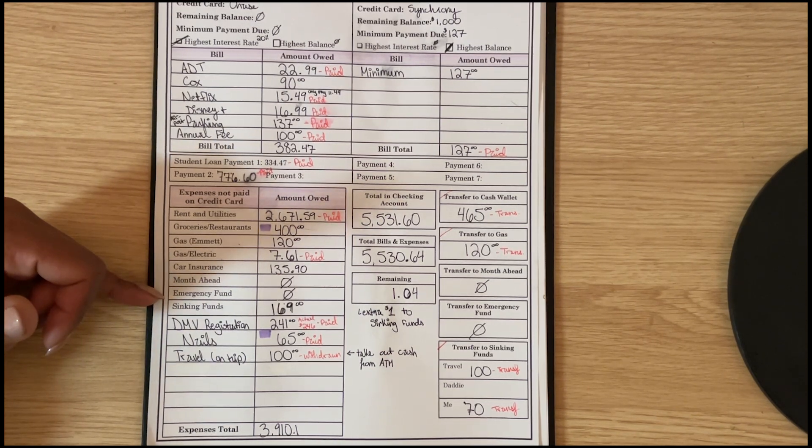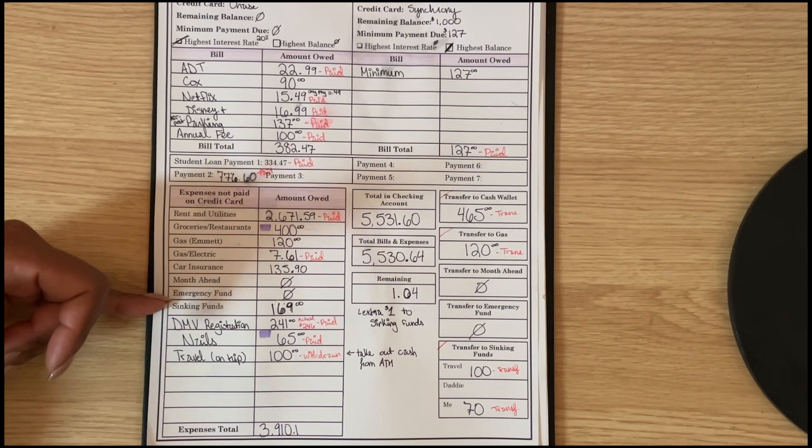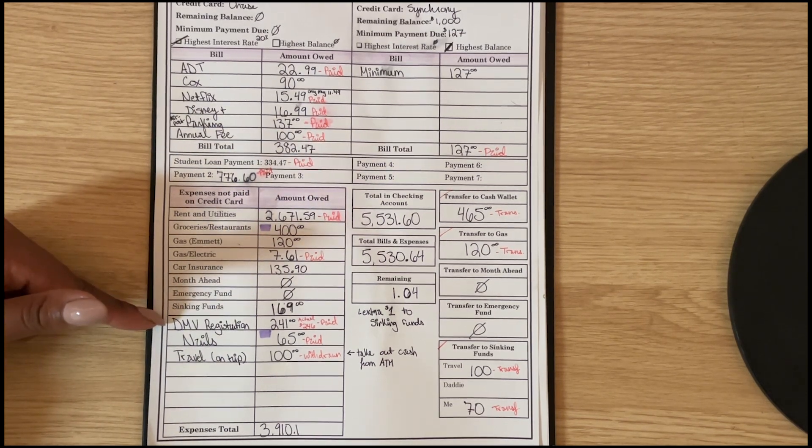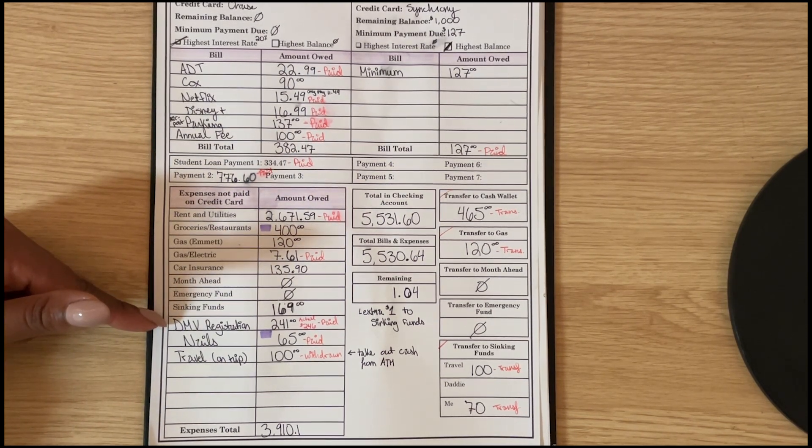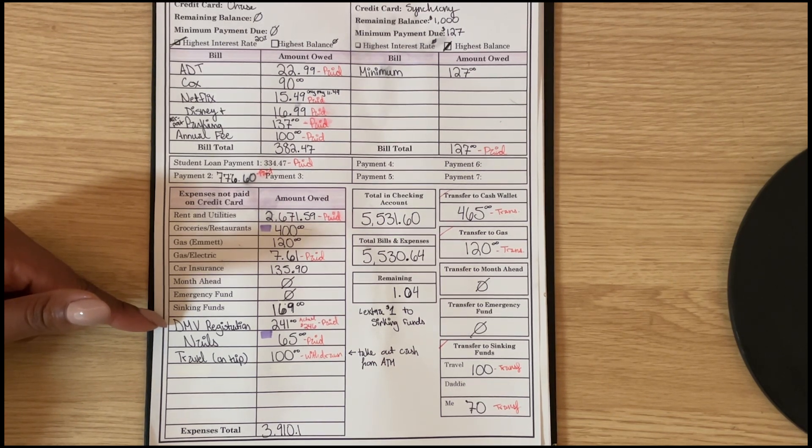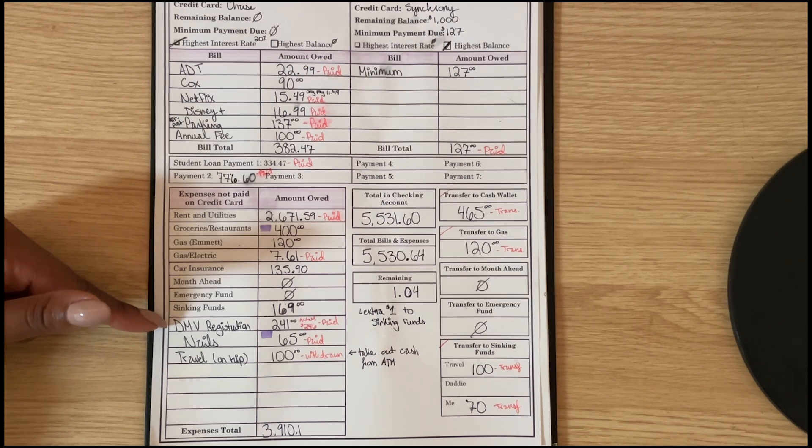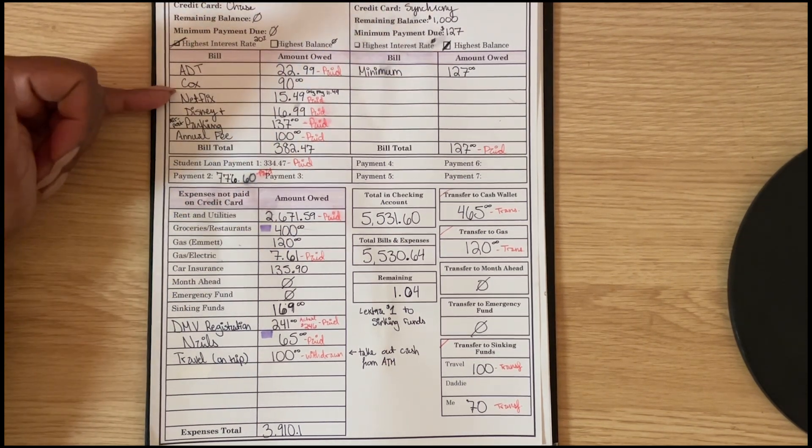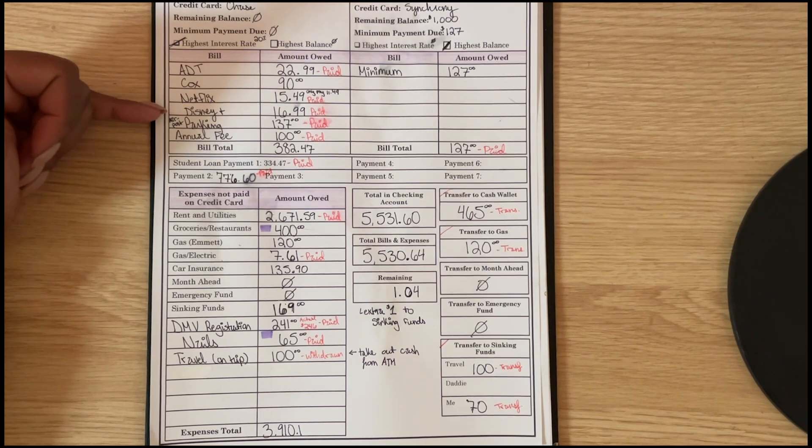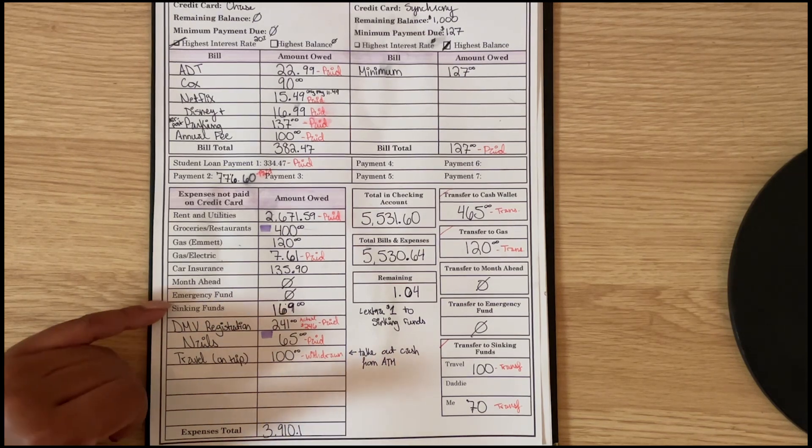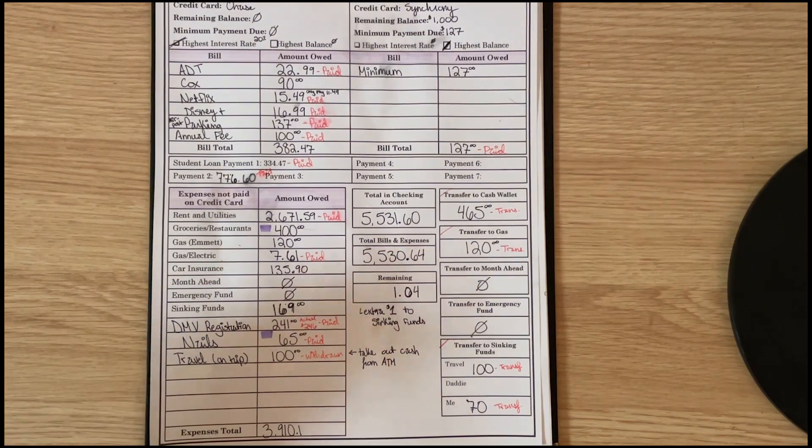Same with the emergency fund, I'm not going to be contributing this month. My sinking funds I am going to put $169. My DMV registration - I thought it was $241 but I got that mixed up with my Adobe Acrobat subscription last month. So my DMV was actually $246, and so I just paid $11.49 and I took money out of my emergency fund to cover that extra $5. It's no big deal.